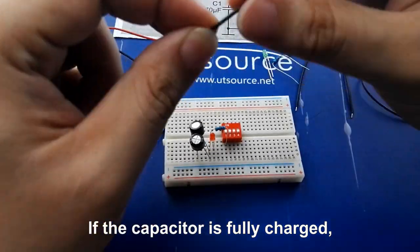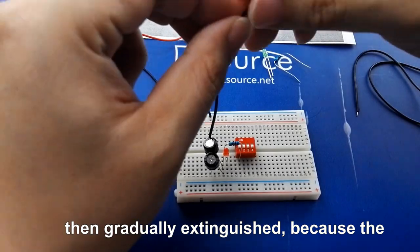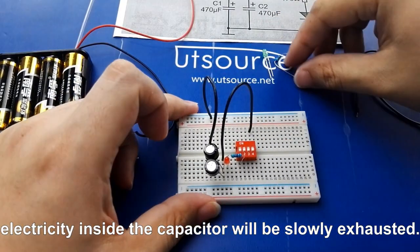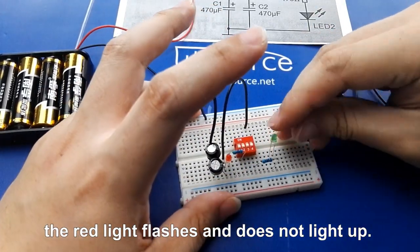If the capacitor is fully charged, the green LED light should be lit first, then gradually extinguished because the electricity inside the capacitor will be slowly exhausted. When S1 is closed, the red light flashes and does not light up.